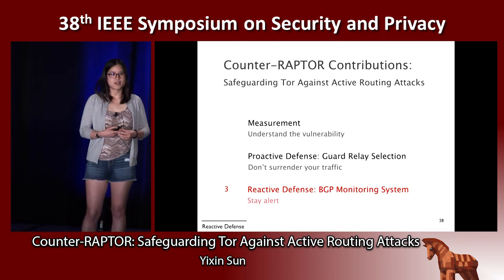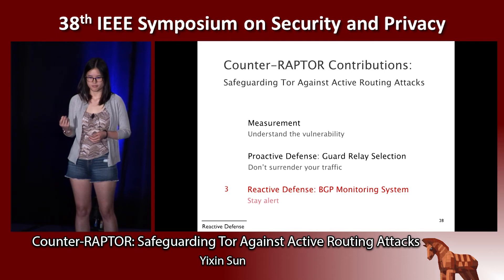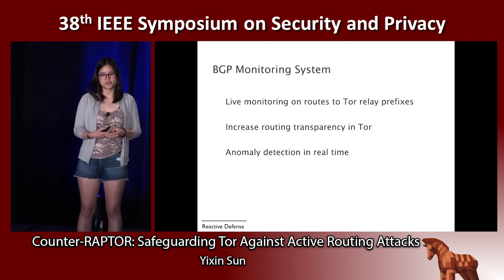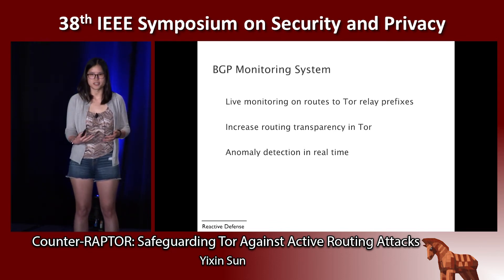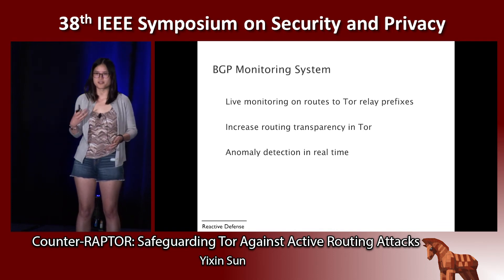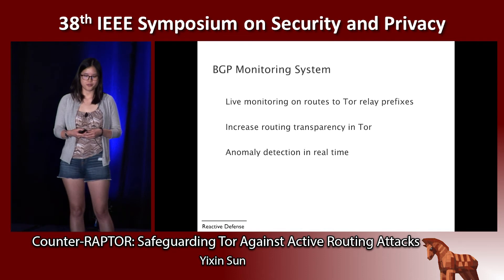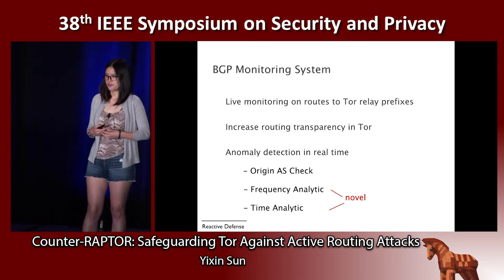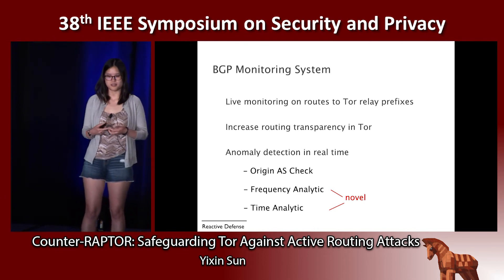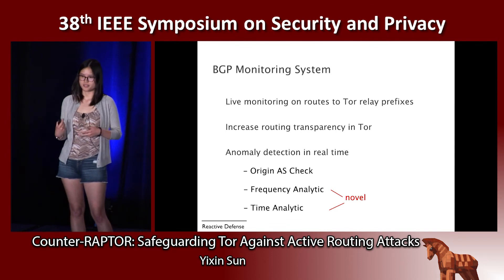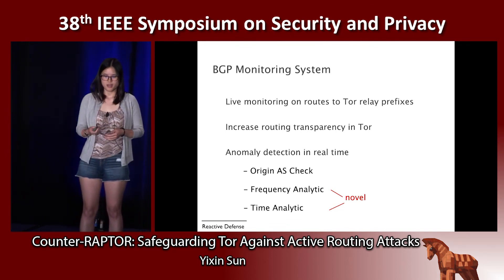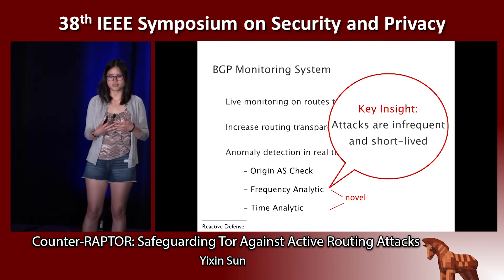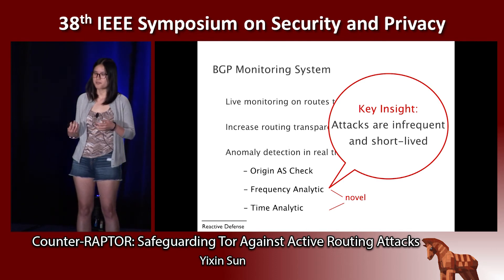Finally, we present our live BGP monitoring system for Tor. The system does live monitoring on all routes to Tor relay prefixes, with the goal of increasing routing transparency in Tor so people can see how routes to all Tor relays change in real-time. We also perform anomaly detection in real-time using three techniques: origin AS check, frequency analytic, and time analytic. The key insight behind both analytics is that attacks are usually infrequent and short-lived compared to benign announcements.